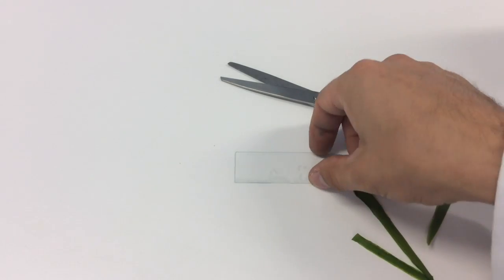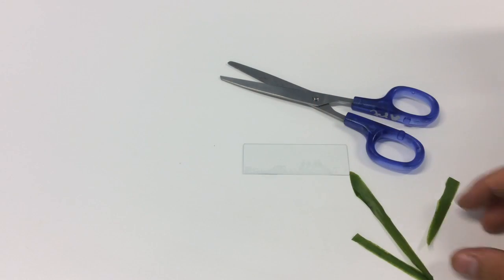Okay, so the materials you need today are a pair of scissors, a slide, and a subject to view. I've chosen a leaf because it is quite easy to get a sample from.